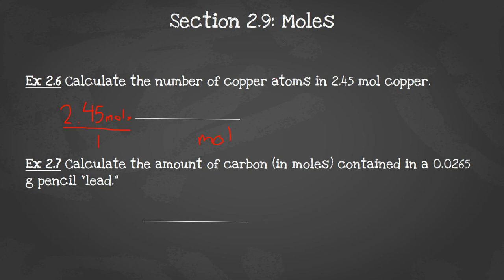And we are trying to find the number of atoms. So atoms are going to go up top and it's going to be Avogadro's number of atoms in one mole. So 6.022 times 10 to the 23rd, that's how many atoms are in one mole. When you're doing scientific notation, do not hit the multiplication button. Because if you hit multiplication times 10, your answer will be 10 times too big.